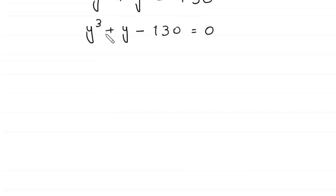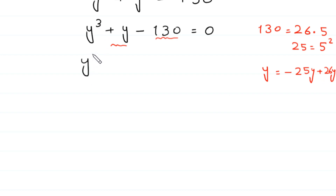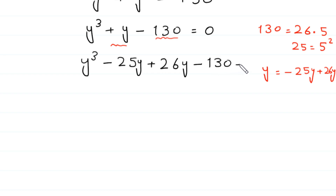Now, this is a cubic equation and can be solved by factorization. Note that 130 is equal to 26 times 5, and 5 squared is equal to 25. So we split the plus y term as negative 25y plus 26y. We write y cubed minus 25y plus 26y minus 130 is equal to 0.